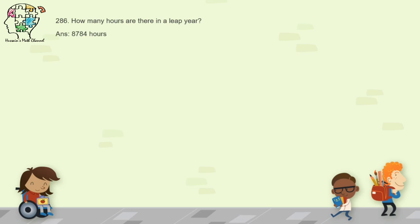Question 287: change 0000 to 12-hour clock system. 0000 in 24-hour clock means midnight, so in 12-hour clock it is written as 12:00 AM.